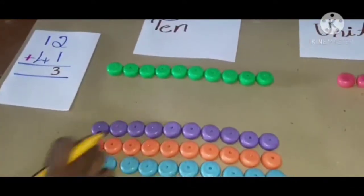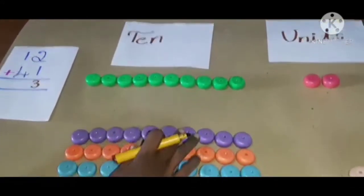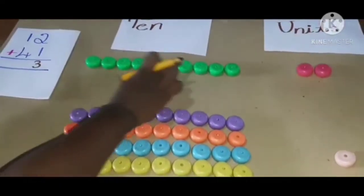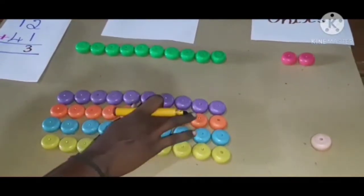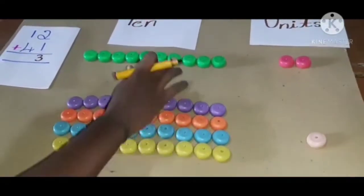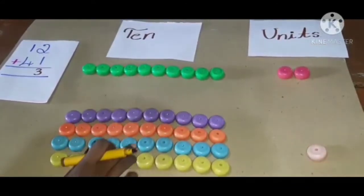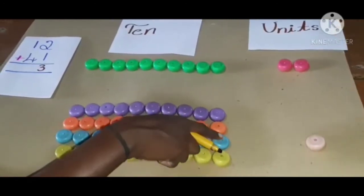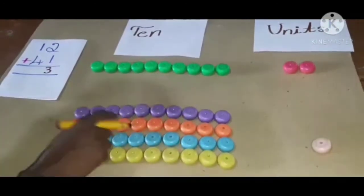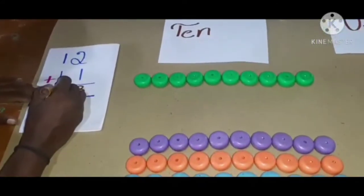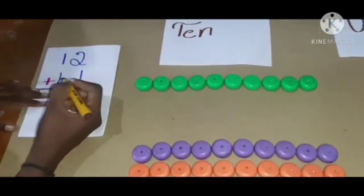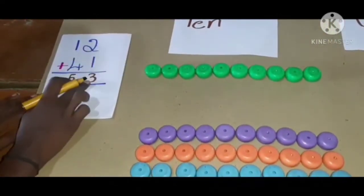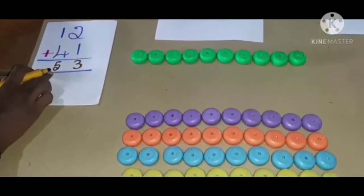Now, you can count tens. So here 1 ten and here 4 tens. Each line 10 beads. Count now: 1, 2, 3, 4, 5. So 1 plus 4, 5 tens. 10, 20, 30, 40, 50. So 1 plus 4, 5. 5 tens, 50. Total, 53. 2 plus 1, 3. 1 plus 4, 5. 53.